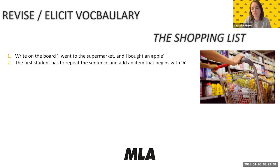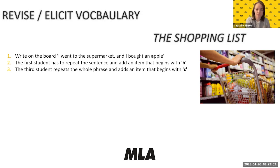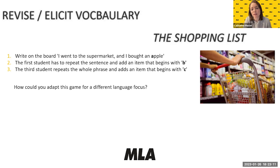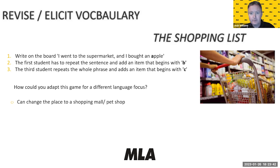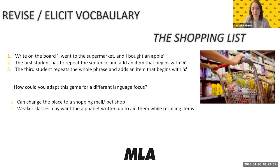It goes: 'I went to the supermarket and I bought an apple and two bananas.' The third student repeats the whole phrase and adds an item beginning with C. You can use different topics — instead of supermarket items, you could say 'I went to the pet shop and I bought' or 'I went to Paris and I saw.' Clothes, parts of the city — any topic works.